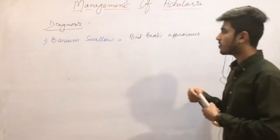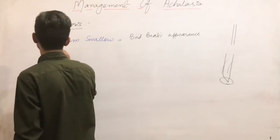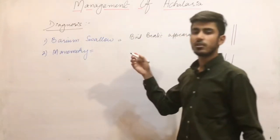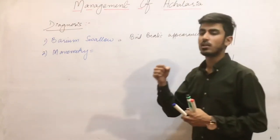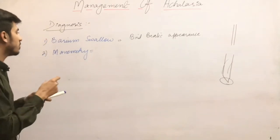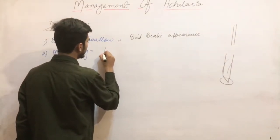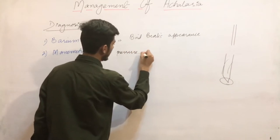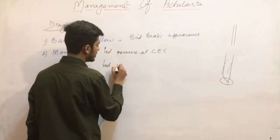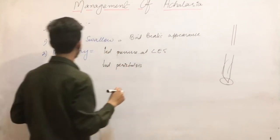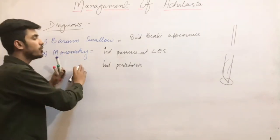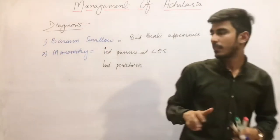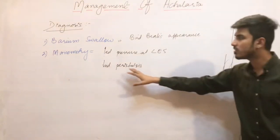After barium swallow, the second investigation is manometry. Manometry is basically the measurement of pressure. On manometry in Achalasia, we find increased pressure at the lower esophageal sphincter and decreased peristalsis in the distal part of the esophagus.